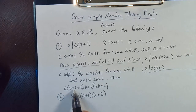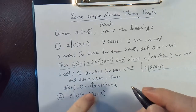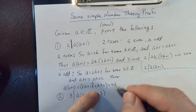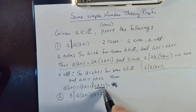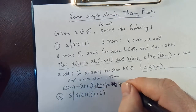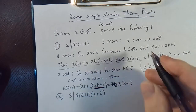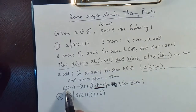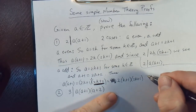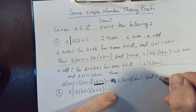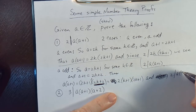So a times a plus one — all I need to do is factor a two out of 2k plus two. This is equal to two times k plus one, times 2k plus one. So a times a plus one is equal to two times a number, therefore it is even. So two divides a times a plus one.